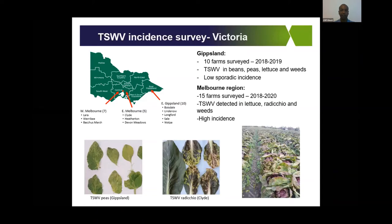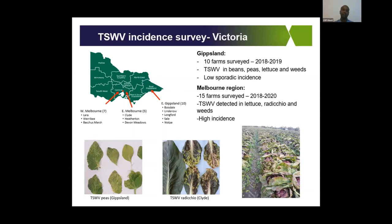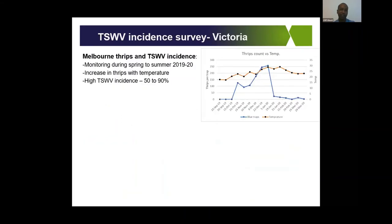On the other hand, in the Melbourne region we've been detecting a lot of tomato spotted wilt in the Werribee and Bacchus Marsh areas, and incidence is quite high. We think this is because of new residential developments closer to these vegetable growing regions — with new developments come ornamentals and other plants in new houses, and there's a spillover of thrips and the disease into the farms, causing a huge problem.